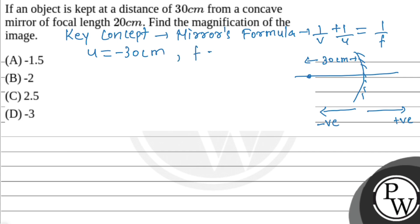The focal length of the concave mirror given is 20 cm, which is minus 20 cm. Now we will put these values in our mirror formula.